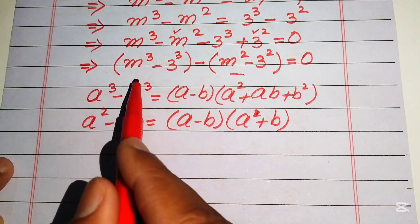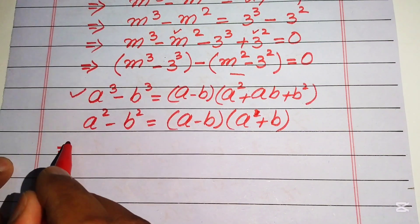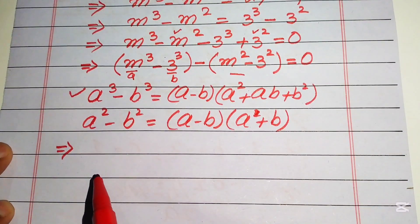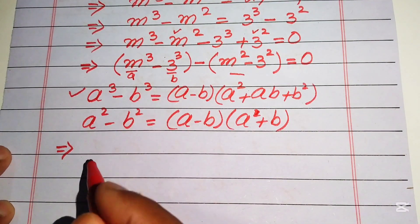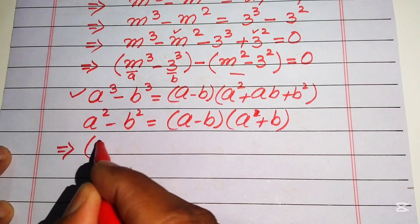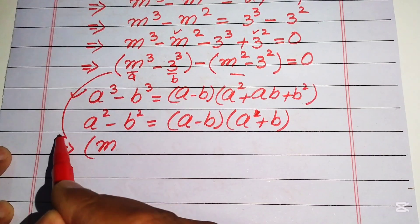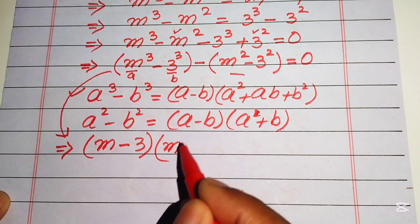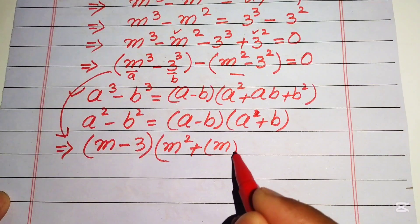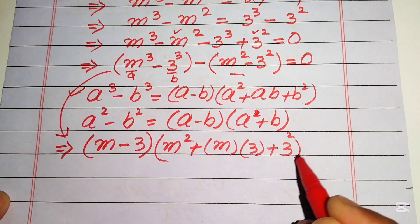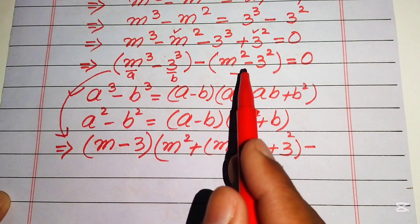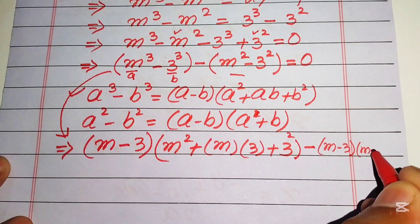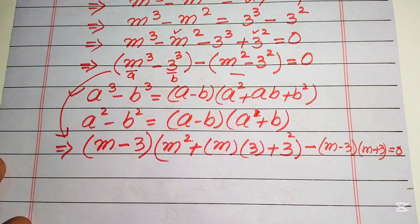Applying the cubic formula to m cubed minus 3 cubed: here a equals m and b equals 3. Substituting, we get (m minus 3)(m squared plus 3m plus 3 squared). Then applying the difference of squares formula to the second term gives (m minus 3)(m plus 3). The whole equation equals 0.